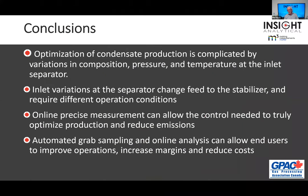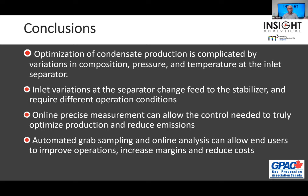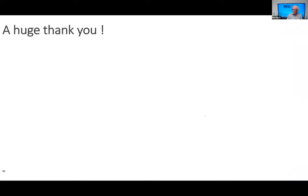To conclude: optimization of condensate production is complicated because there are lots of variations in composition, pressure, and temperature. Those inlet variations on the separator side change everything that goes over the stabilizers, and we need to find different operating points. If we can put in online, precise measurements, we can start to control production quality, increase production volumes, reduce emissions, and reduce power consumption. We can add in automated grab sampling for online analysis, plus composite sampling, to measure what we're supposed to. What we can measure, we can control — and control leads us to make better money. A huge thank you to all who attended, to GPAC — the Gas Processing Association of Canada — who arranged this, and to Chelsea, Jeannie, and Jen for helping with video and Zoom hosting.